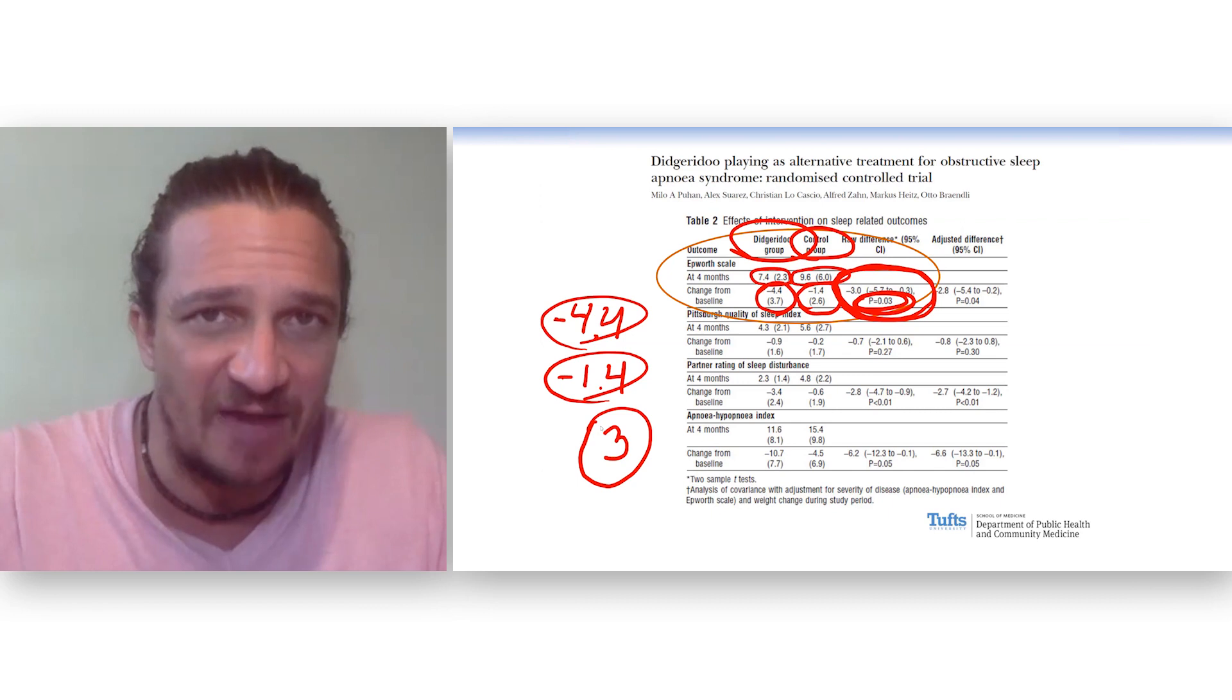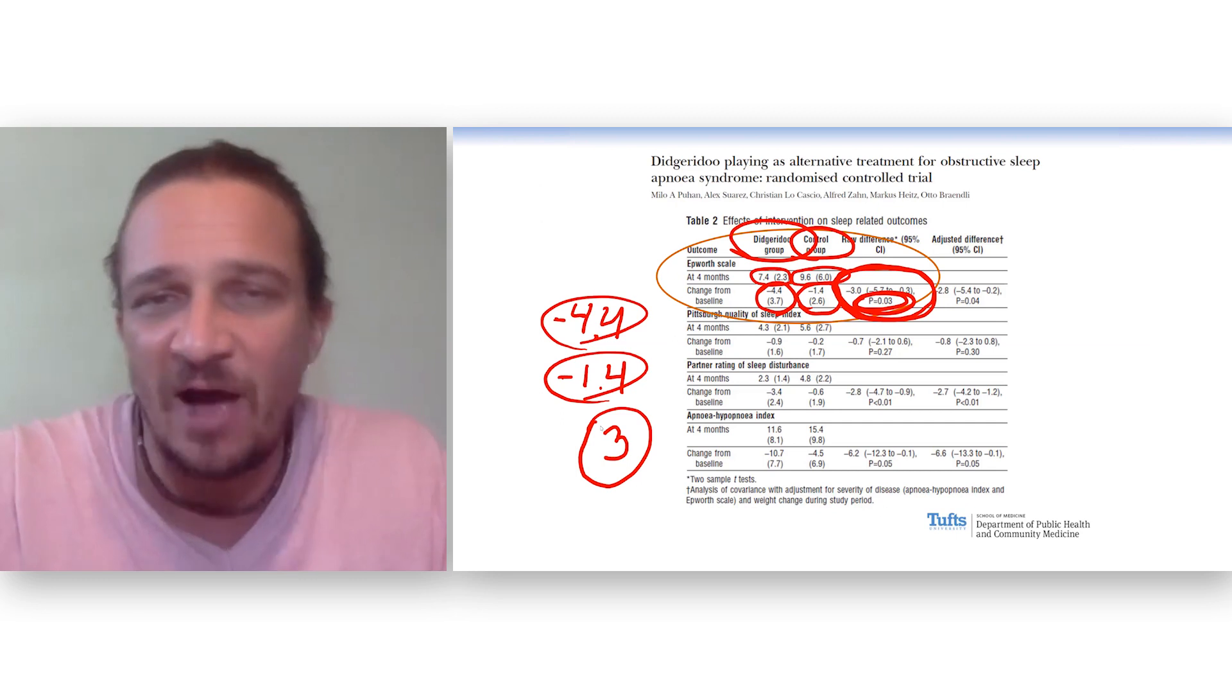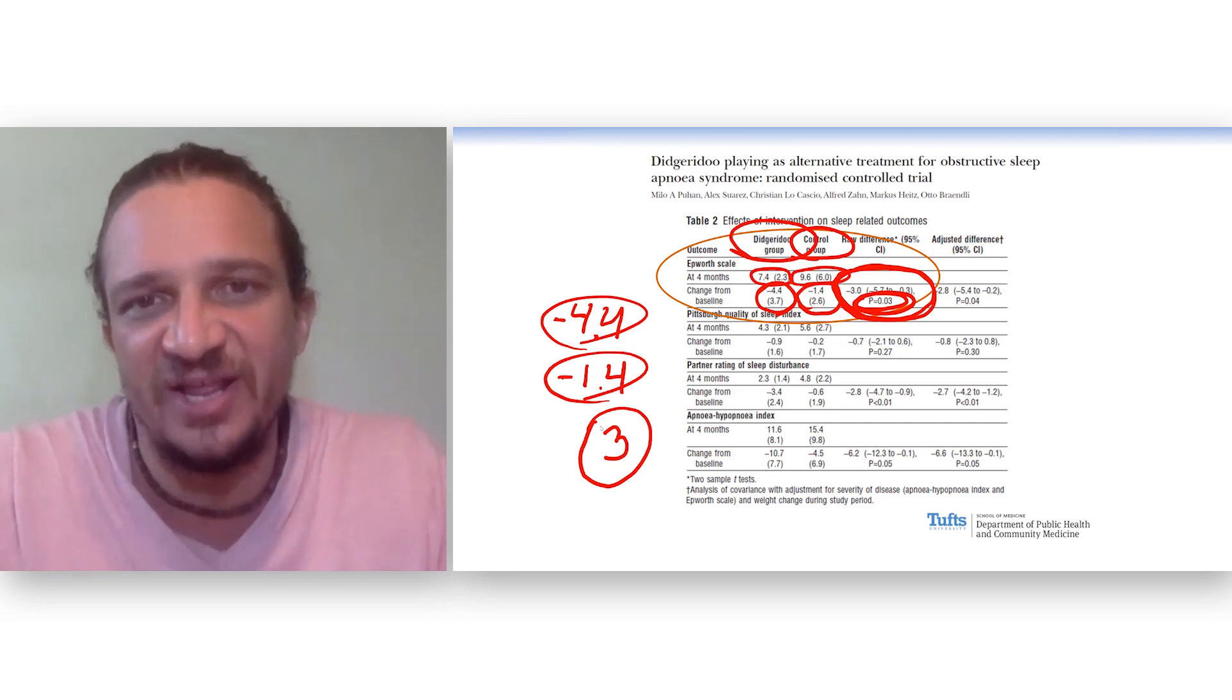It's a 95% confidence interval which doesn't include 0, so the p-value will be less than 0.05. Now, again, the follow-up question: is that a clinically relevant difference?